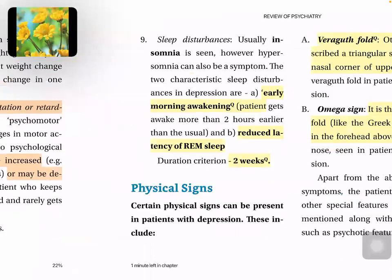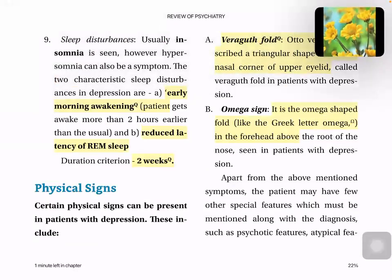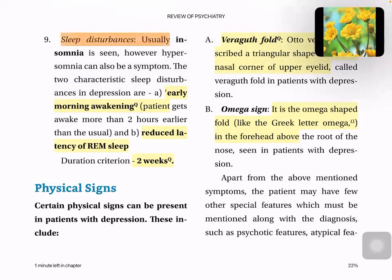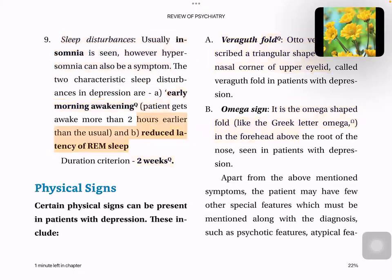Sleep disturbances and insomnia are features of depression. Hypersomnia can also be a feature and is a presentation of atypical depression. Early morning awakening and reduced latency of REM sleep are features. The duration criterion for diagnosing a major depressive episode is two weeks.